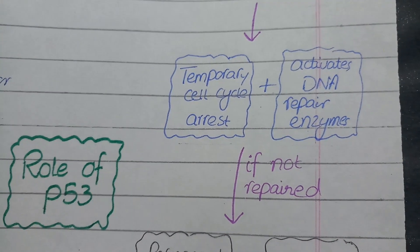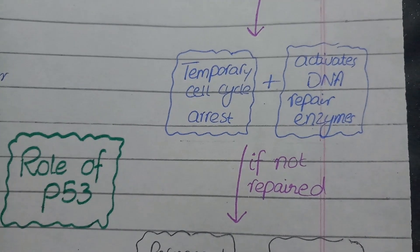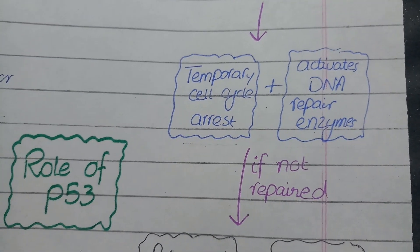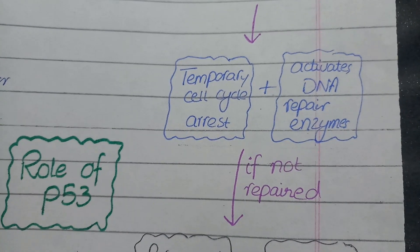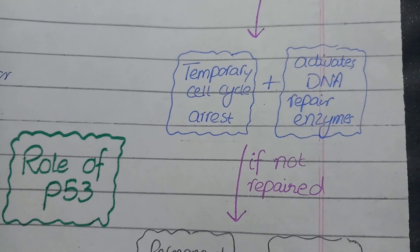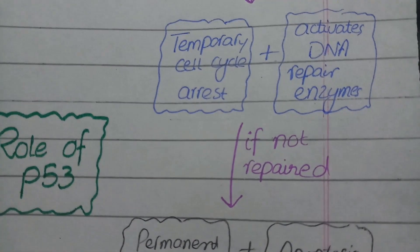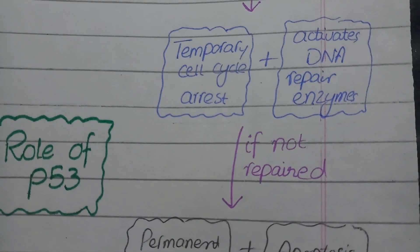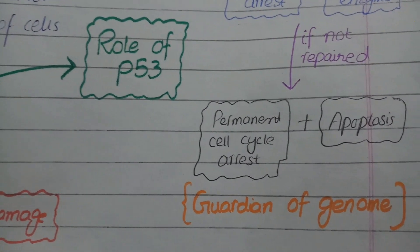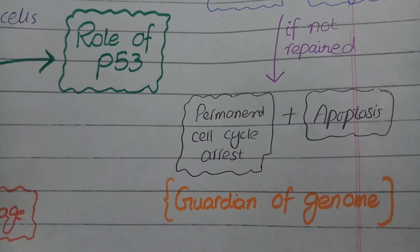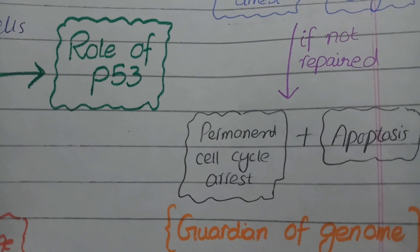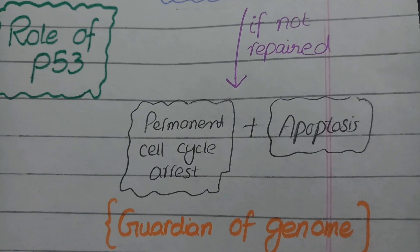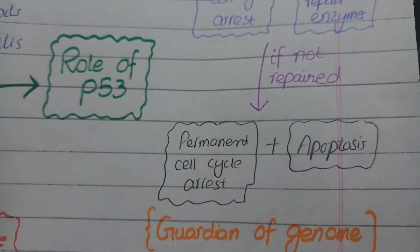This temporary arrest of the cell cycle is called quiescence, and the significance of this strategy is to give enough time to DNA repair enzymes before the next cell cycle so that DNA damage can be recovered. Sometimes DNA damage is so extensive that even DNA repair enzymes are unable to correct it. In that case, p53 protein plays its second strategy — it inhibits the cell cycle permanently. This permanent cell cycle arrest is called senescence, and meanwhile it programs the cell with damaged DNA to die by apoptosis.